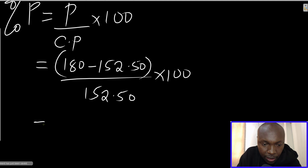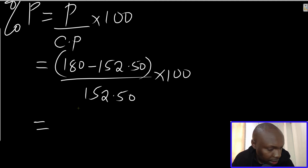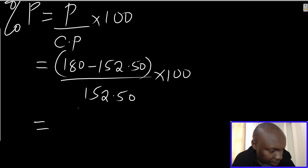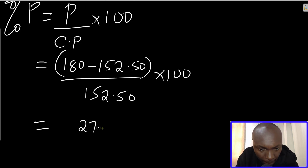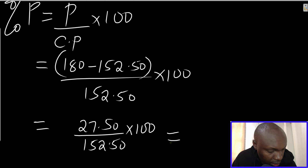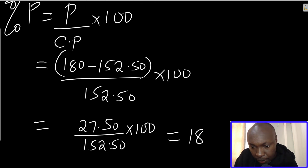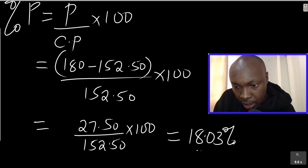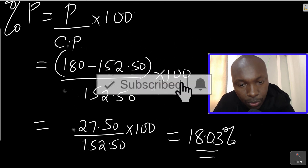Working this out: 180 subtract 152.5 gives 27.50. So we have 27.50 divided by 152.50, multiplied by 100. This gives 18.03 percent. That is simply how you solve that question. Thank you.